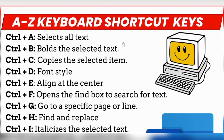The first shortcut key is CTRL plus A. By pressing CTRL plus A, the whole text will be selected. If you want to select the whole document or text, just press CTRL plus A.